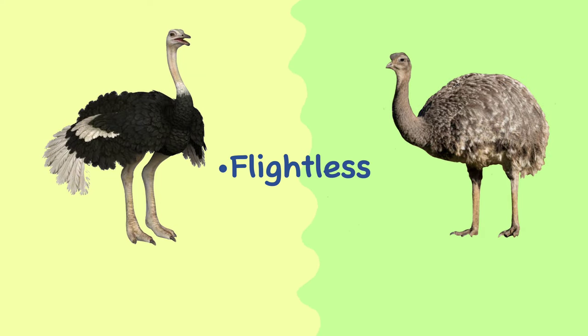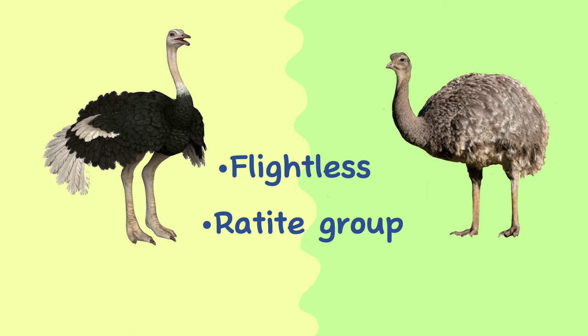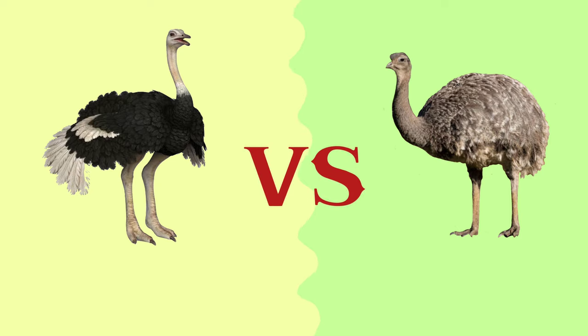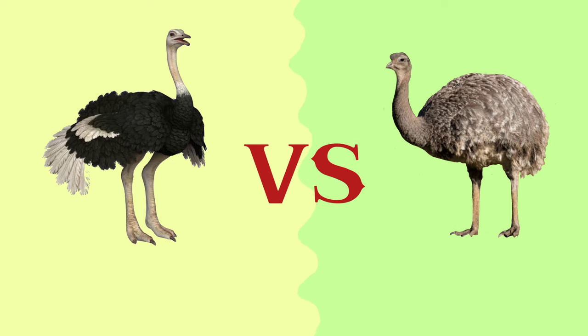Ostriches and Rheas are both large flightless birds belonging to the Rattite group, but they are native to different continents and have several distinct characteristics. In this video we will talk about the basic differences between ostrich and Rhea.